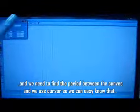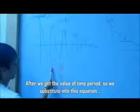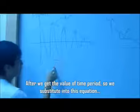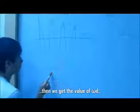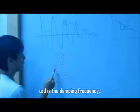We take two high peak points of the curve and we need to find the period between these curves. And we use the cursor. Then we can easily know that the time period is 0.9 seconds. We substitute into this equation, then we get the value of omega d. Omega d is the damping frequency.